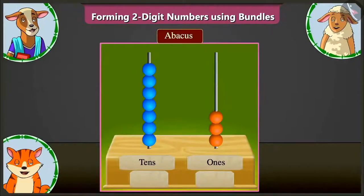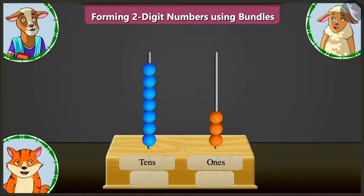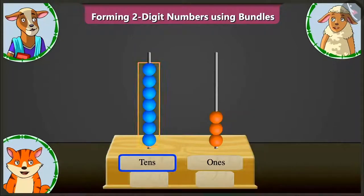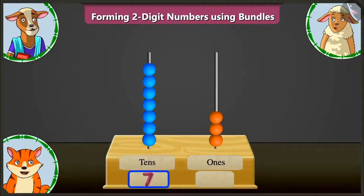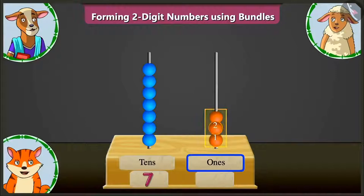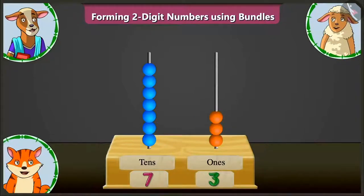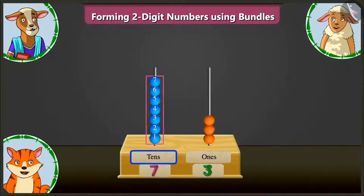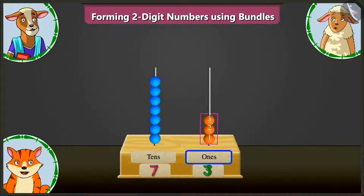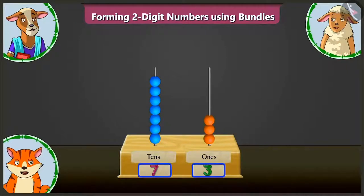Look, here is an abacus. You have to look at it and form a number. Lily, in the tens box there are one, two, three, four, five, six and seven beads — so we write seven in the tens box. In the ones box, there are one, two and three beads — so we write three in the ones box. Seven tens means 70 and three ones means three, so adding 70 and three makes the number 73.